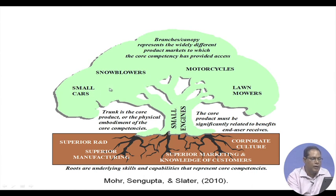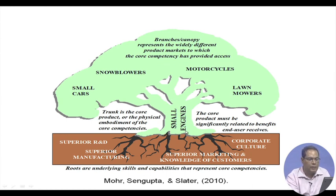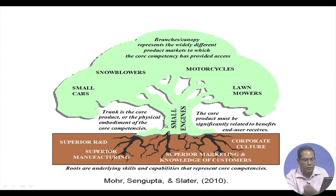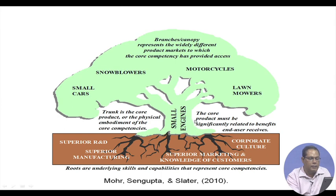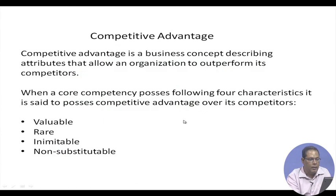This trunk, or core competency, can be useful in various industries such as small cars, snow blowers, motorcycles, and lawn mowers. The branches or canopy represent the widely different product markets to which the core competency has provided access. Honda's whole knowledge in the area of small engines gives it a core competency that allows it to serve various product markets.